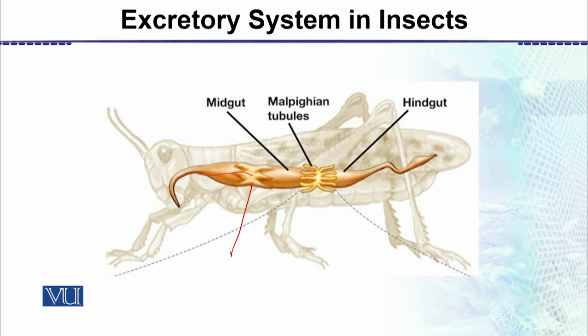At the junction between the mid-gut and hindgut, there are many fine and numerous Malpighian tubules. These are immersed in the hemolymph, which is a colorless blood-like liquid containing water, surplus water, and nitrogenous waste. These substances are absorbed here.